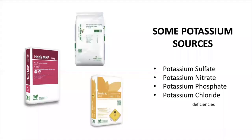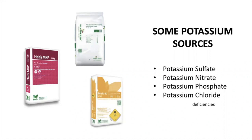In hydroponics, we have different sources of potassium that we can use in our nutrient recipes: potassium sulfate, potassium nitrate, potassium phosphate, and potassium chloride. Potassium chloride is mostly used for deficiencies because it has a high potassium content — when you are experiencing potassium deficiency symptoms, you can use potassium chloride.